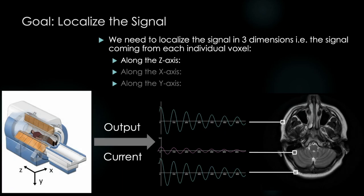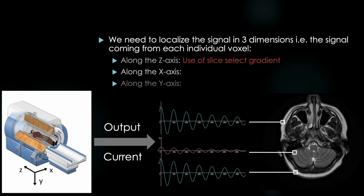So we have accomplished the first major hurdle. We've developed a creative method for exciting a slice of the body along the z-axis. We simply create a gradient magnetic field varying linearly from head to toe and tune our RF pulse to the unique Larmor frequency of the slice we want to image. Next up, signal localization along the x-axis.